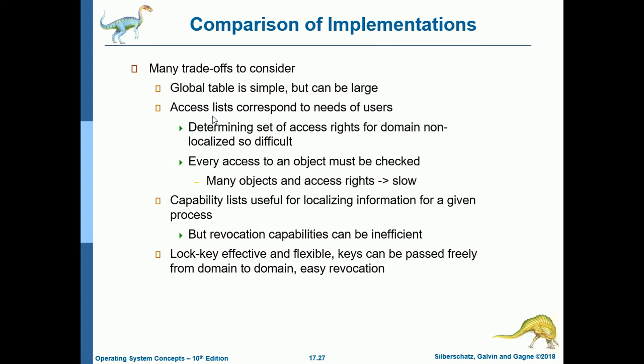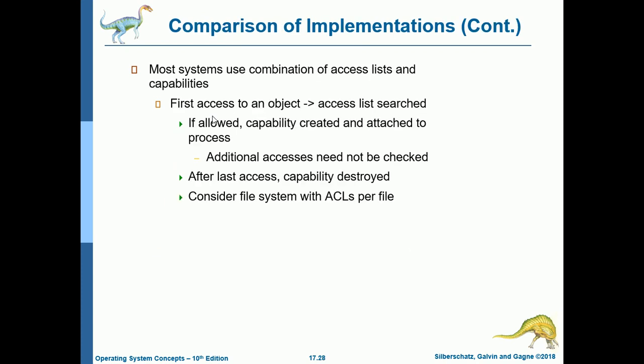Capability lists are useful for localizing information for a given process, but revocation of capabilities can be inefficient. The lock-key scheme is effective and flexible — keys can be passed freely from domain to domain with easy revocation. Most systems use a combination of access lists and capabilities (options 2 and 3): first access to an object searches the access list; if allowed, a capability is created and attached to the process; additional accesses need not be checked; after the last access, the capability is destroyed. This is used in file systems with ACLs per file.